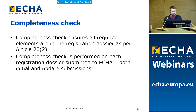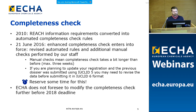The completeness check ensures that all required elements are in the registration dossier as per Article 20 of REACH Registration. The completeness check is performed on each registration dossier submitted to ECHA, regardless if it is an initial submission or an update. Now I am going to give you a little history of the completeness check.